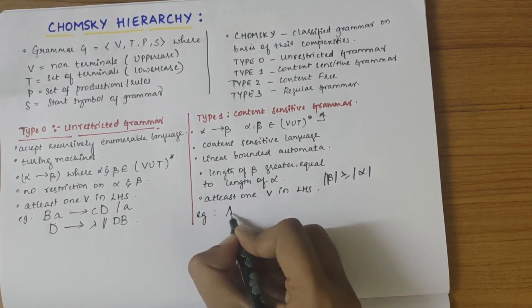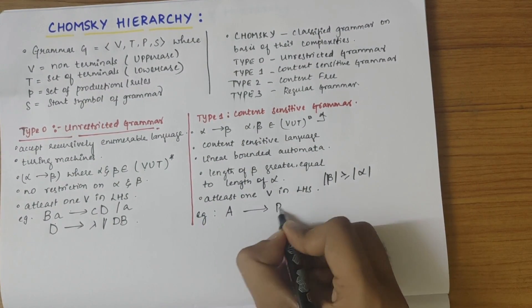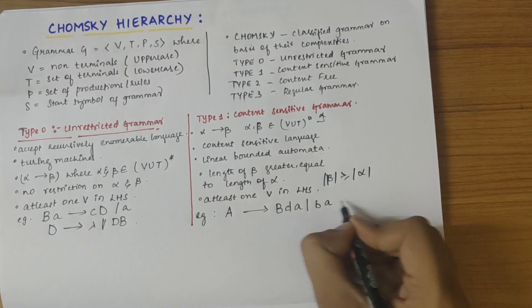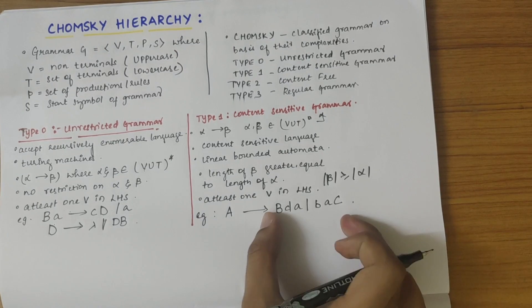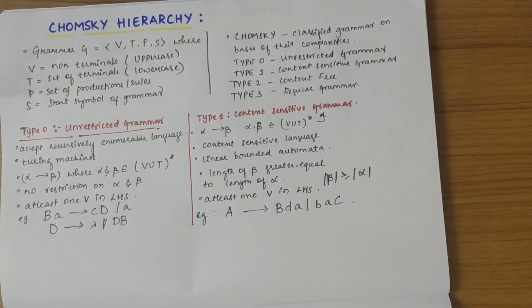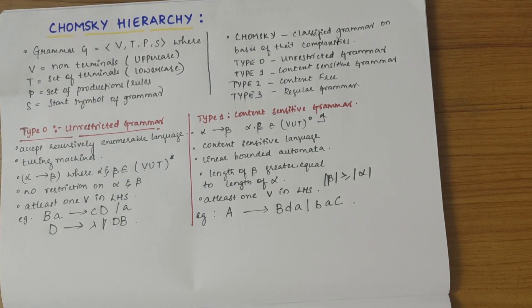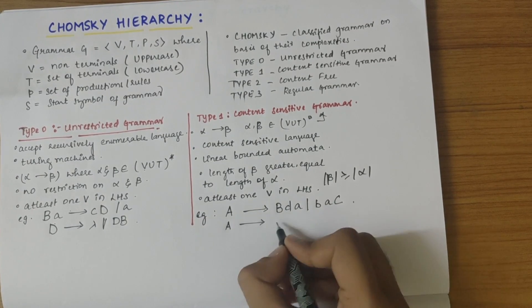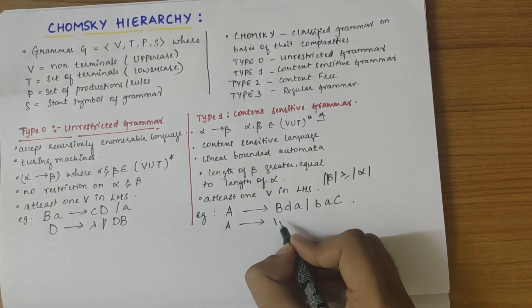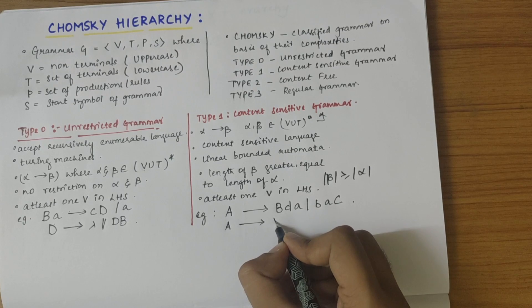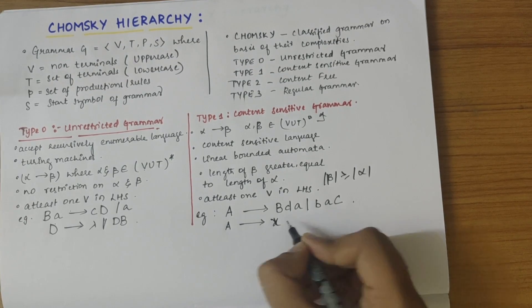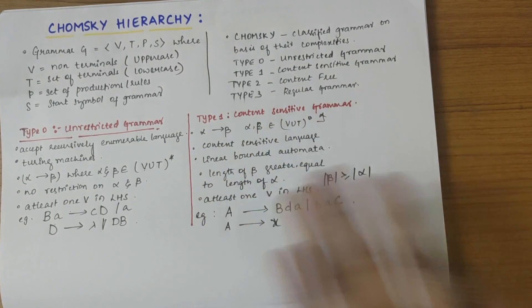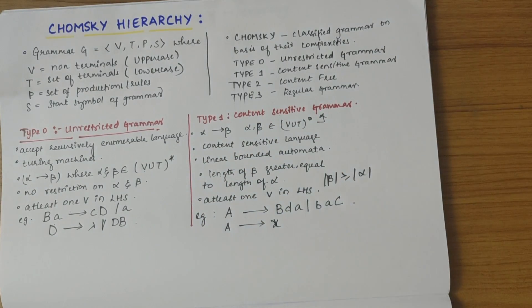For example, A derives BDA BAC — here the length of beta is greater than the length of alpha. Or we can take another example: A derives X, where the length is equal. In this case also it is context sensitive grammar.